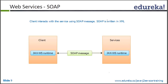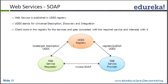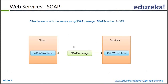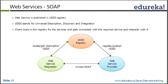The client interacts with SOAP messages. There is a client and a server which provides the service. JAX stands for Java API for XML Web Services. This is a runtime that generates a SOAP message and sends it to the service; the service processes it, converts the result back into a SOAP message, and sends it back to the client.